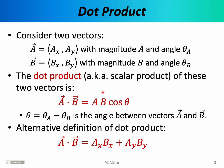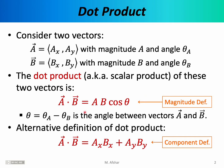Both of these two definitions give you exactly the same result. Which one should you use on your homework or on an exam? It depends on what information is given to you. If the magnitudes of the vectors are given, then the first definition is better. If the x and y components are given, then the second definition is better. Both definitions ultimately produce the same exact number. I'll refer to the top equation as the magnitude definition of the dot product, and the bottom equation as the component definition of the dot product.